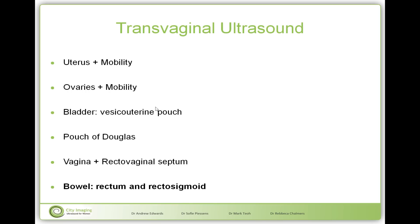That is why we should try with transvaginal ultrasound to identify bowel endometriosis. The complete assessment to look at deep infiltrating endometriosis includes looking at the uterus and the mobility of the uterus, the ovaries and their mobility. But in addition we also need to look at the bladder, the pouch of Douglas, the vagina and the rectovaginal septum, and the bowel — which is highlighted today because this lecture is going to be about identifying lesions on the bowel.